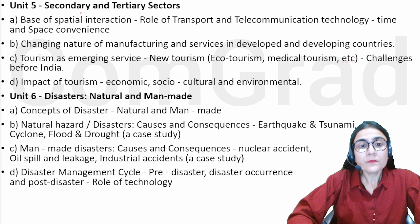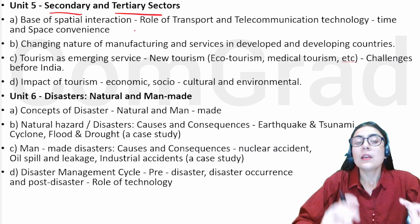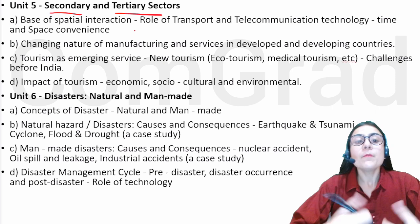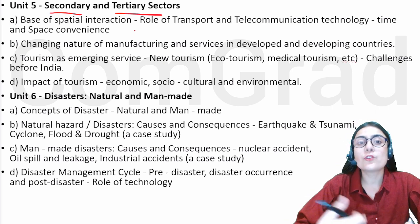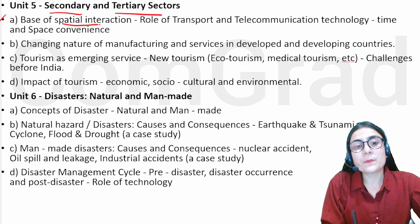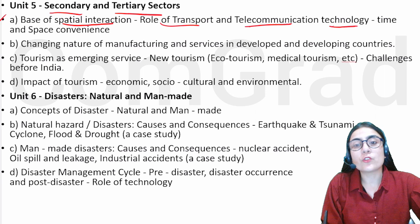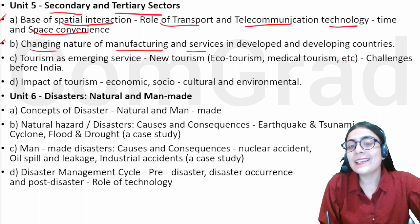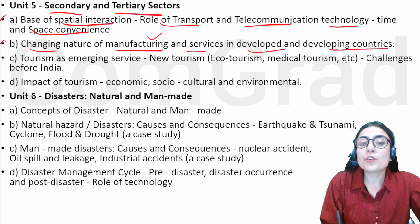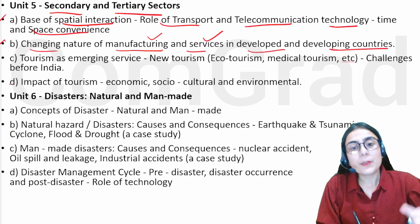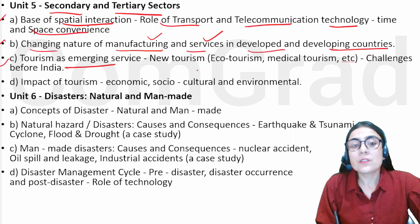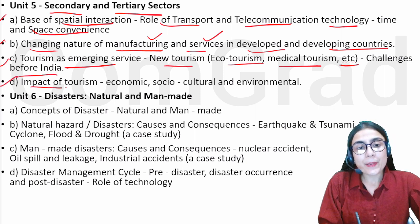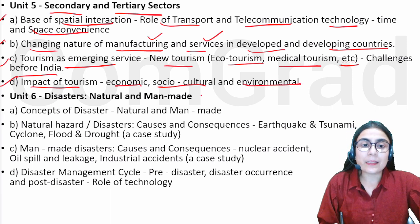The fifth unit is related to secondary and tertiary sectors. These sectors are primary, secondary and tertiary. Primary sector is related to agriculture. Secondary sector is manufacturing, related to industry. We will see the base of spatial interaction, role of transport, telecommunication, technology, time and space convenience. Next is changing nature of manufacturing and services in developed and developing countries. Tourism as an emerging service — new tourism, eco-tourism, medical tourism, etc. These are challenges before India. Next is impact of tourism: economic, socio-cultural and environmental.